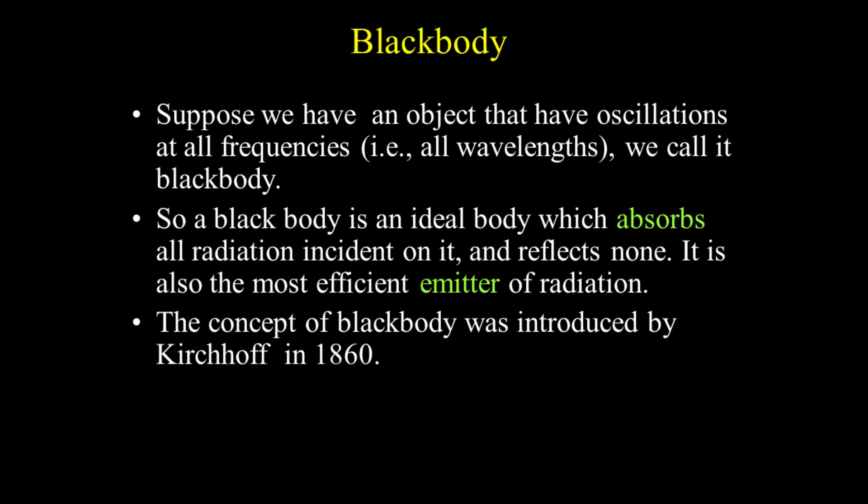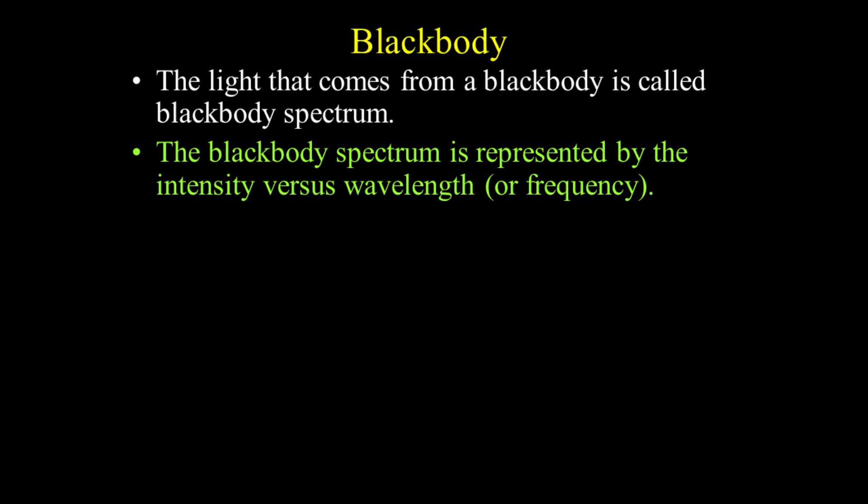Let's discuss blackbody. Suppose we have an object that has oscillations at all frequencies — that is, all wavelengths. We call it a blackbody. A blackbody is an ideal body which absorbs all radiation incident on it and reflects none. It is also the most efficient emitter of radiation. The concept of blackbody was introduced by Kirchhoff in 1860. The light that comes from a blackbody is called the blackbody spectrum, represented by intensity versus wavelength or frequency.